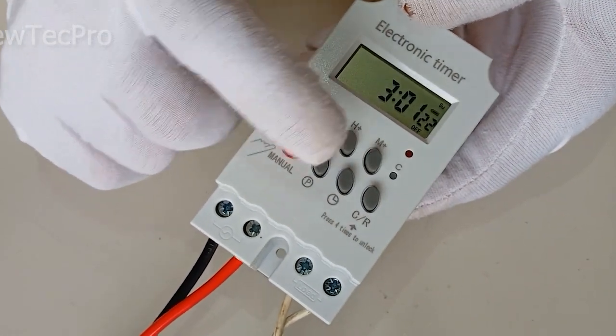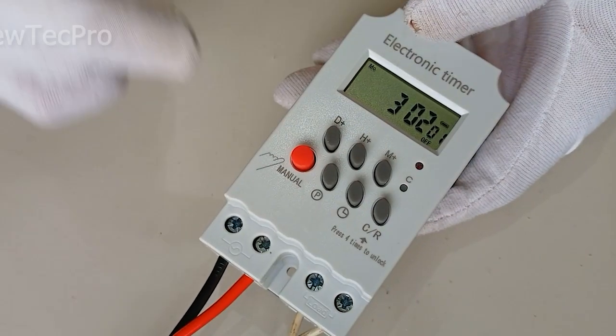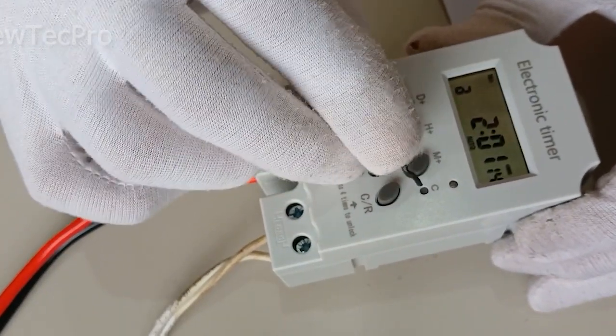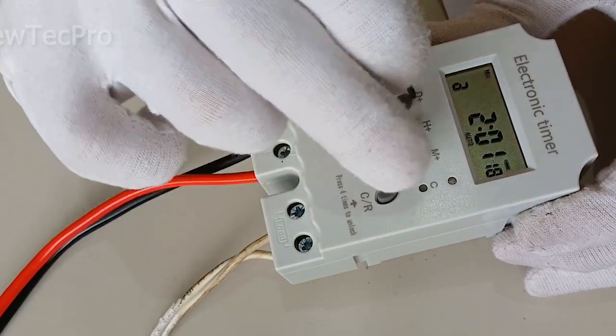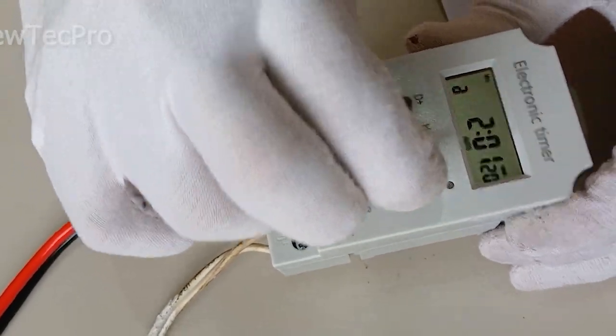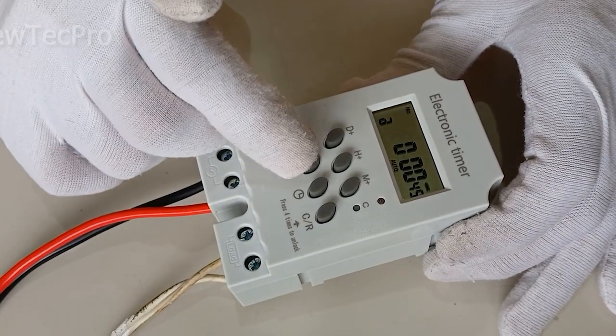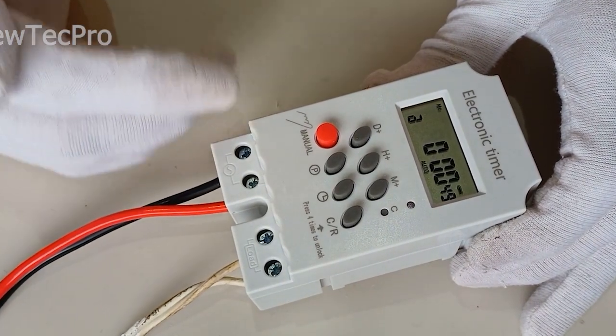Let's go to program. First, reset everything, clear everything by pressing this key C. As you can see, clear everything. It is necessary to set the date and time accurately.